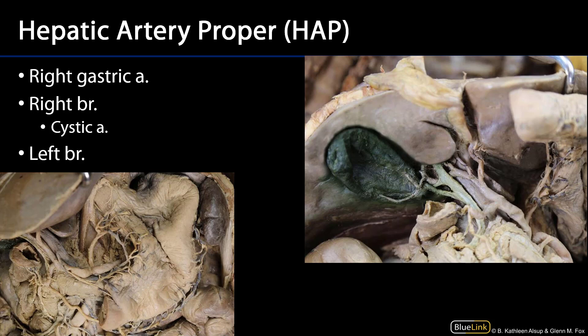Here we can see a better view of the hepatic artery proper. Here is HAP coming up this way, and here we can see the left branch of HAP and the right branch of HAP. Coming off of the right branch, tucked away behind the common hepatic duct, is the cystic artery, heading out to and serving the gallbladder.